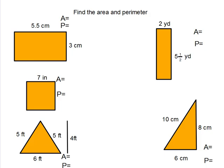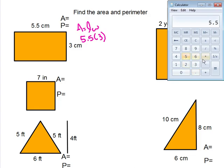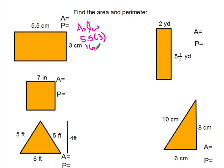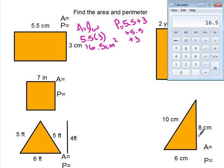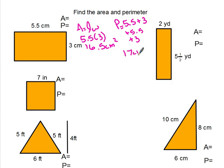So let's take a look at this. We always write down our formula first. This is a rectangle, so A equals length times width. We're going to go 5.5 times 3, which gives us 16.5. Since it was centimeters, area is always centimeters squared. Perimeter — add up all the sides: 5.5 plus 3 plus 5.5 plus 3, which equals 17 centimeters.